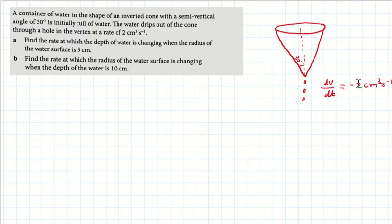The minus sign indicates that the water is flowing out. As the water flows out, the height will decrease. Let h be the height. We are supposed to find the rate of change of height when radius equals 5.